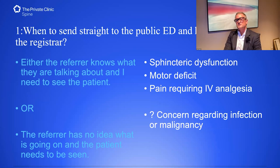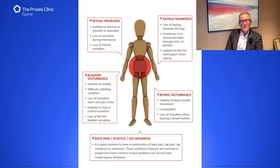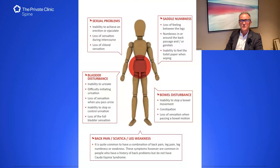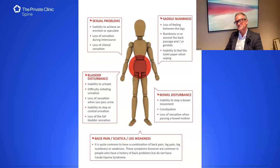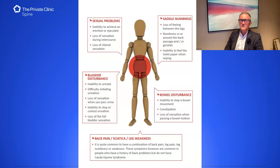Regarding true cauda equina syndrome: the key things from my point of view are inability to urinate — that's the key one. Loss of saddle sensation. Bowel disturbance is vague, ranging from constipation and leakage to diarrhea, but complete inability to pass urine or overflow, or loss of saddle sensation, are clear indications that nobody will argue against sending the patient to the emergency department.